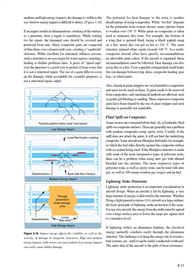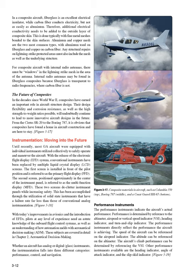The outer skin of the aircraft is the path of least resistance. In a composite aircraft, fiberglass is an excellent electrical insulator, while carbon fiber conducts electricity, but not as easily as aluminum. Therefore, additional electrical conductivity needs to be added to the outside layer of composite skin. This is done typically with fine metal meshes bonded to the skin surfaces. Aluminum and copper mesh are the two most common types, with aluminum used on fiberglass and copper on carbon fiber. Any structural repairs on lightning strike protected areas must also include the mesh as well as the underlying structure. For composite aircraft with internal radio antennas, there must be windows in the lightning strike mesh in the area of the antenna. Internal radio antennas may be found in fiberglass composites because fiberglass is transparent to radio frequencies, whereas carbon fiber is not.